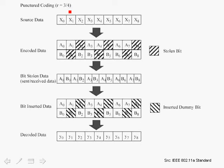Let's go over how we get the coding rate with puncturing. Here's the source data — we have 9 bits. The 9 bits are input to the convolutional encoder, which is a half-rate encoder, so we get 2 times 9 bits, or 18 bits, including all the redundancy. In puncturing, we take 6 bits and toss them away — these are stolen bits — so we are left with 18 minus 6, or 12 bits. So for every 9 bits, we get 12 coded bits. Taking the ratio 9 over 12, we get a three-quarter rate.